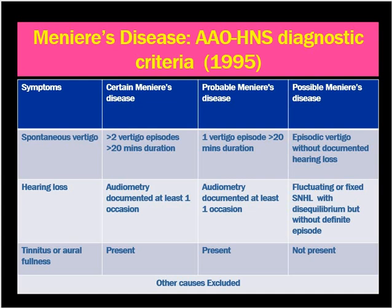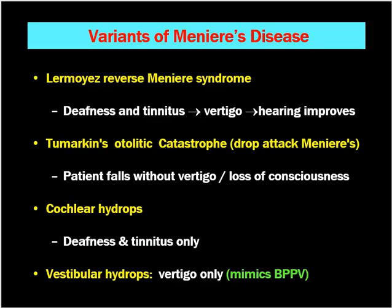There are certain variants of Meniere's disease. The first is Lermoyez's reverse Meniere's syndrome. In typical Meniere's disease the sequence is vertigo first, then tinnitus, then hearing loss. In Lermoyez's syndrome, there is deafness and tinnitus first, followed by vertigo, and hearing improves after the vertigo attack.